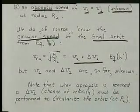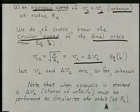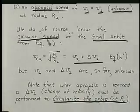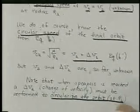Note that when the apoapsis is reached, or apogee, a delta V change of velocity must be performed to circularize the orbit at R2. Otherwise, you fall back down to where it came from.